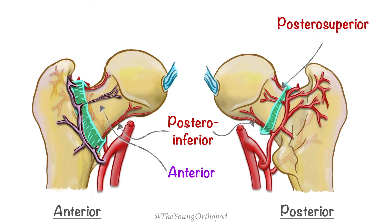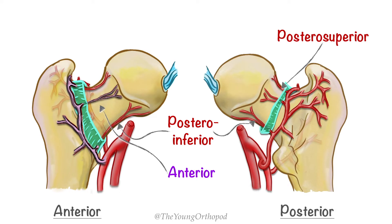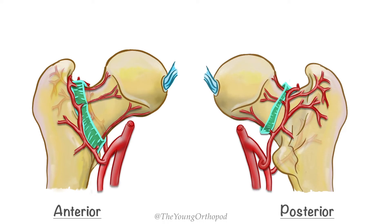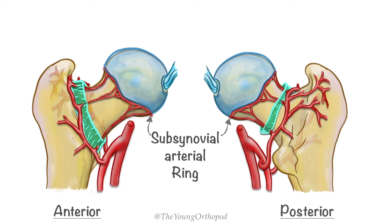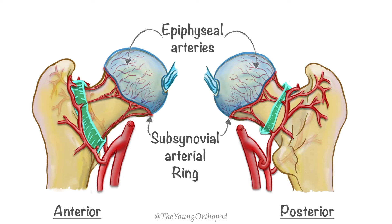The posterior superior retinacular vessels are the most important, as they supply most of the femoral head. These retinacular vessels anastomose to form a subsynovial arterial ring over the base of the femoral head at the margin of the articular cartilage. This intracapsular ring has been found to be incomplete more often in boys than in girls. The epiphysial arteries enter the femoral head at the border of the articular surface and form intraosseous anastomoses.